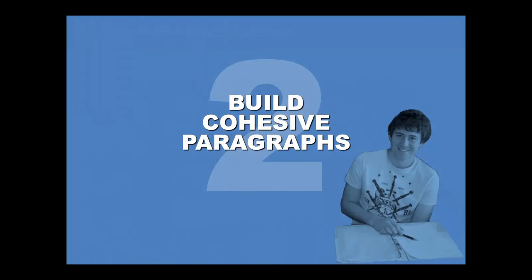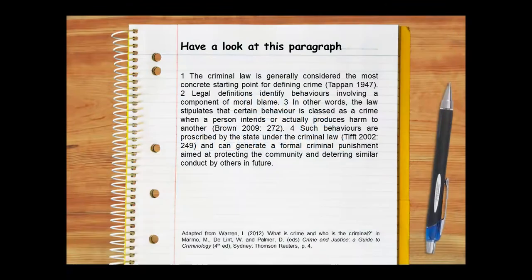Good writers ensure their paragraphs are cohesive, which means their paragraphs feel tight, their ideas seem to belong together, and their writing just flows. Let's explore how they do this by taking a look at a cohesive paragraph based on one in which Ian Warren discusses how lawyers define crime. Pause the video while you read this paragraph, then we'll look at what makes it cohesive. Three things make it cohesive: paragraph structure, sentence structure, and sentence links.